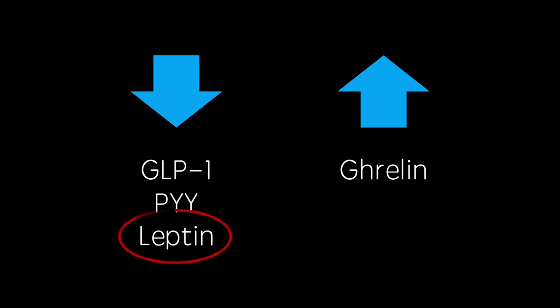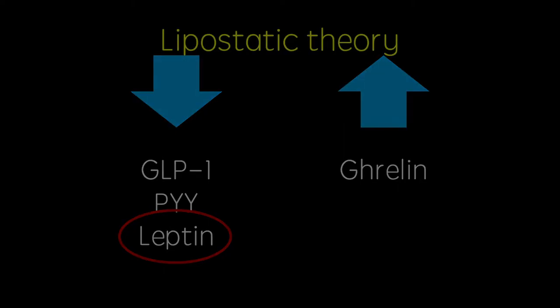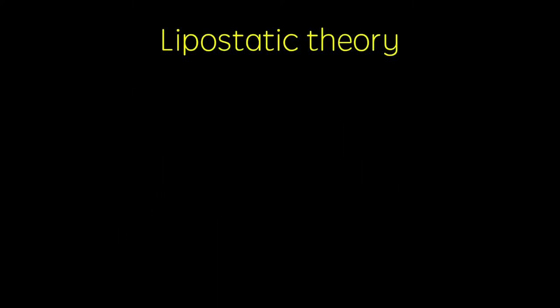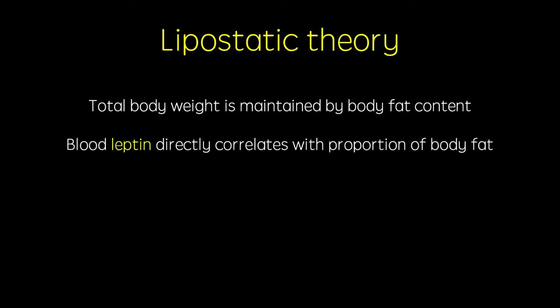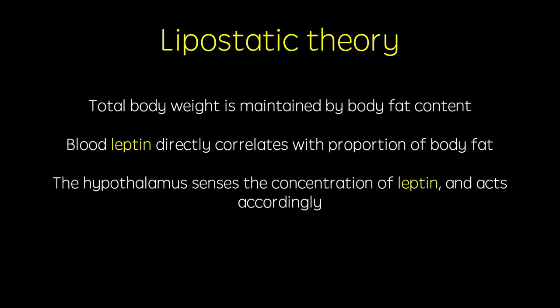The function of leptin is often explained in conjunction with the lipostatic theory. This theory states that body weight is regulated by body fat content. The concentration of leptin in the blood directly correlates with the proportion of bodily fat content and is sensed by the hypothalamus, which acts accordingly.